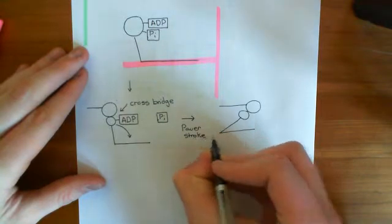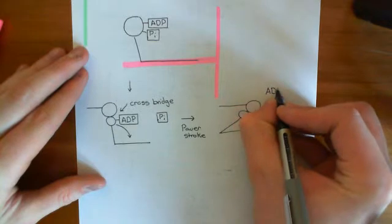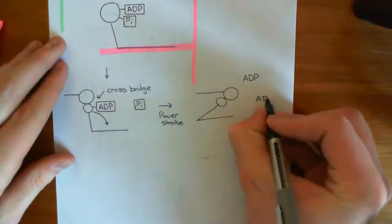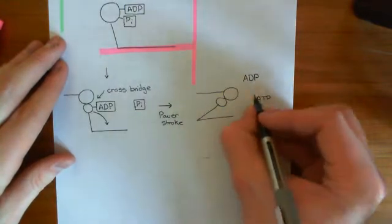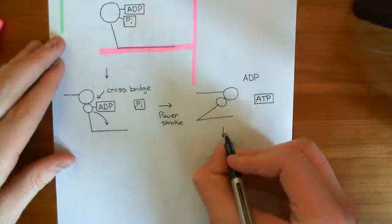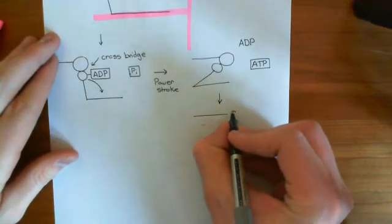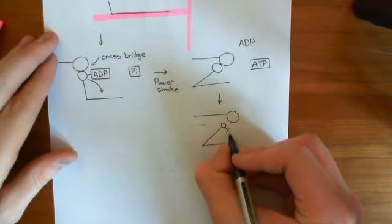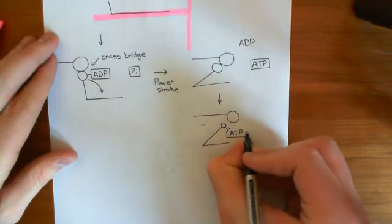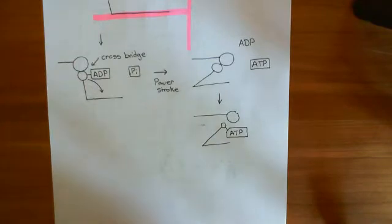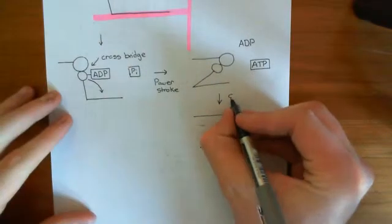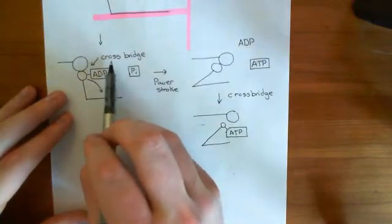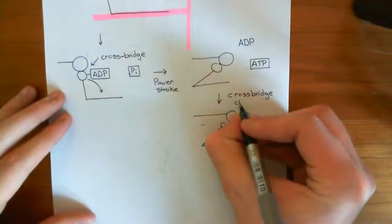When the myosin filament goes through the power stroke, it drops its ADP molecule — in fact, it drops it slightly before it does the power stroke. Now what comes along is an ATP molecule. ATP is going to bind to the myosin head, and it's going to cause the cross-bridge to cleave. So the ATP binds to the myosin head and causes the cross-bridge to cleave — the myosin head and actin monomer are no longer bound to one another. This is cross-bridge cleaving.